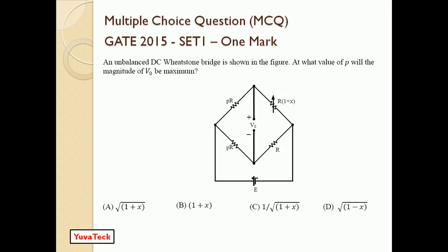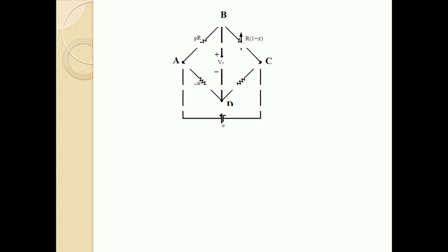We have to find out the value of rho at which the maximum magnitude is available in place of V naught, or across those two points. What is that maximum V naught, and what is the value of rho? We have to find that expression from the four given options.